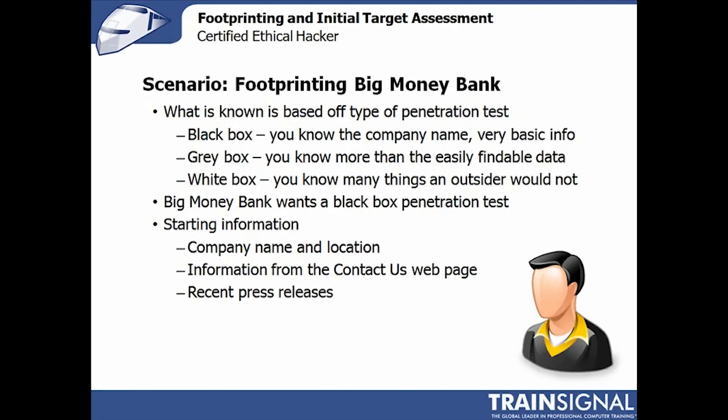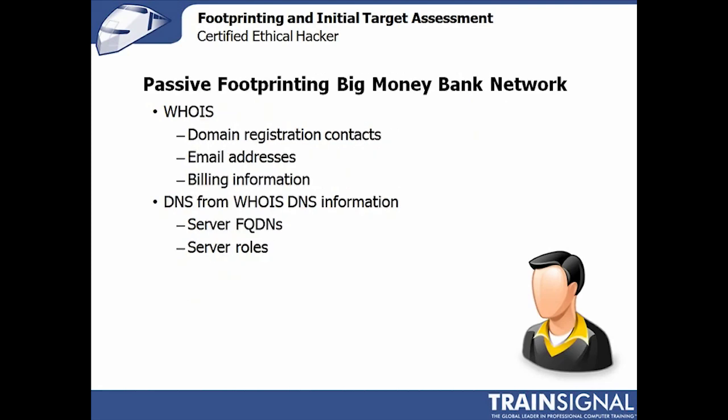For a Big Money Bank black box penetration test, we start with really basic core information — the company name, location, website URL, a few recent press releases that are publicly available, some information from the contact page such as webmaster email, basic phone numbers, and a couple of branch listings. Nothing that would be impossible for an attacker to get with even a cursory glance. That's where we start the footprinting process.